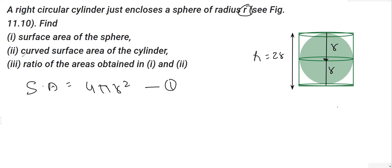In the next part they are asking to find the curved surface area of the cylinder. So we have curved surface area of cylinder, we have a formula which is 2πrh.